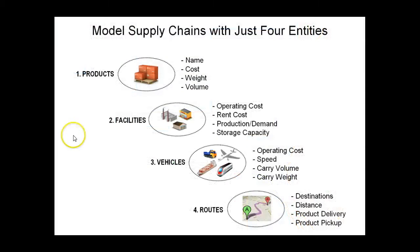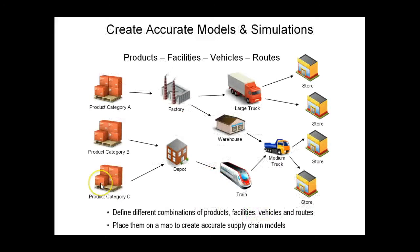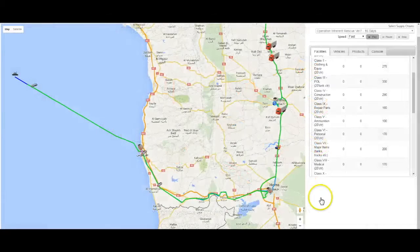Supply chains are composed of combinations of four entities: products, facilities, vehicles, and routes. You can model any supply chain with combinations of these four entities. Place them on a map and simulate their interactions to see how that supply chain will work.